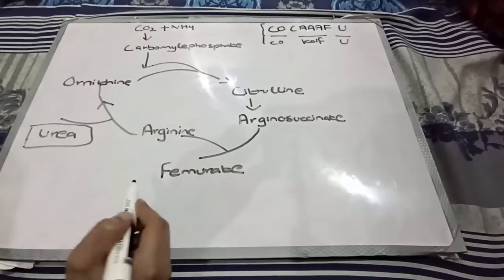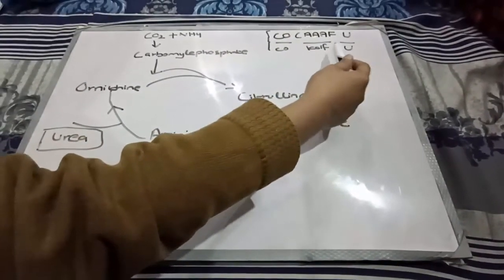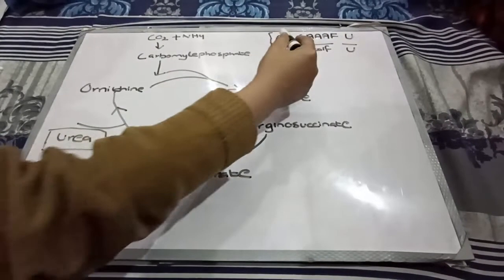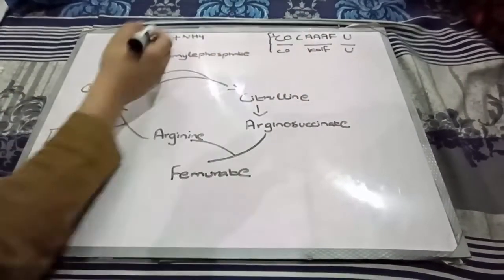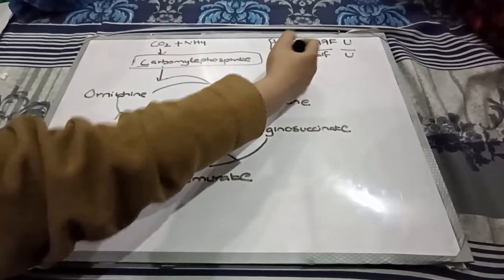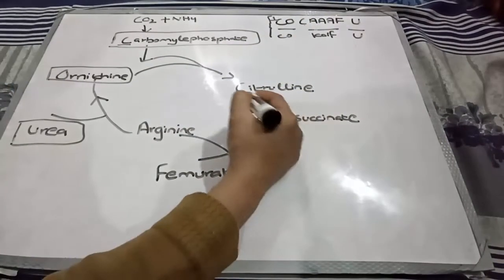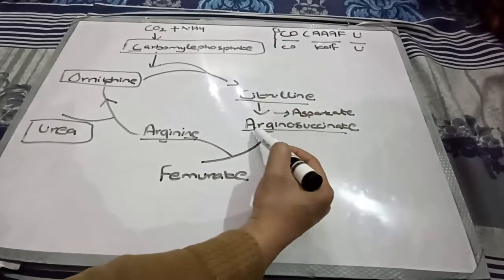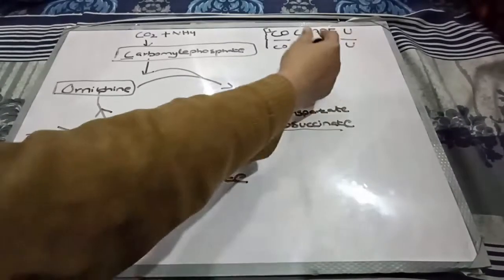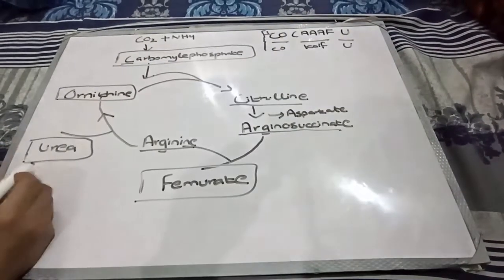So, before starting this cycle, we used a mnemonic which was COCAFU. Now I will use these words and explain how we have used this mnemonic in our whole cycle. The first letter is C — here you can see carbamoyl phosphate. Next letter was O — here we have used O for ornithine. The next letter was C — citrulline. Here, citrulline is converted into arginosuccinate, and for its conversion, aspartate is required. So A for aspartate, another A for arginosuccinate, and the other A for arginine. F for fumarate, and U for urea.